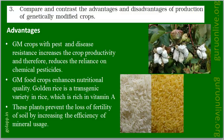Compare and contrast the advantages and disadvantages of production of genetically modified crops. Advantages: GM crops with pest and disease resistance increase crop productivity and therefore reduce the reliance on chemical pesticides.